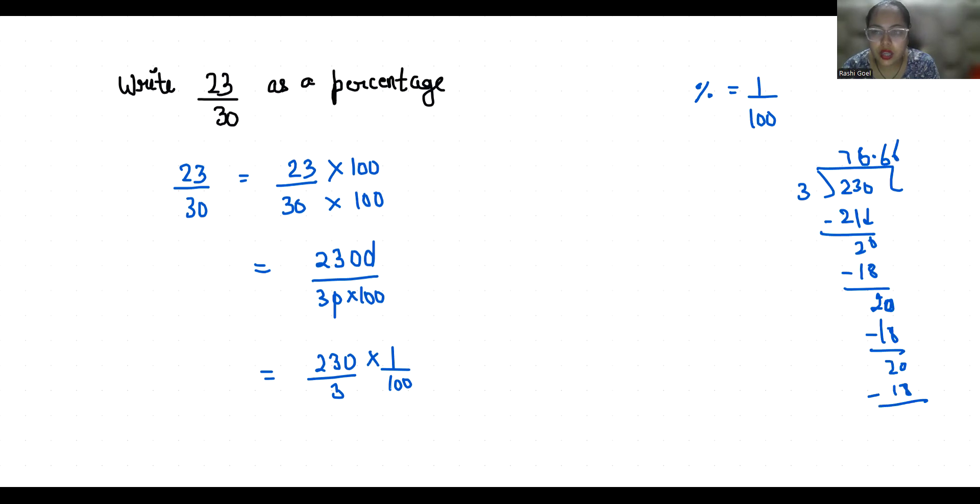So we can write this as 76.67 approximate times 1 by 100. And now we know that we can replace 1 by 100 with this percent sign, so it becomes 76.67%. So 23 by 30 in terms of percentage is 76.67%. I hope it's clear and you find it useful.